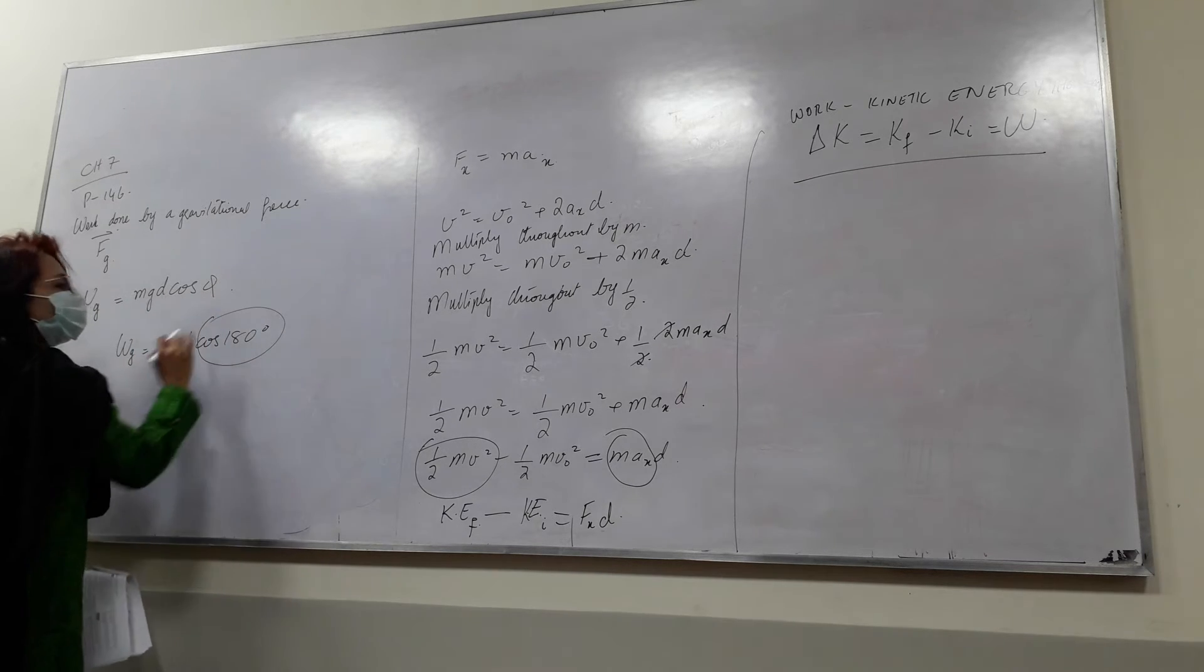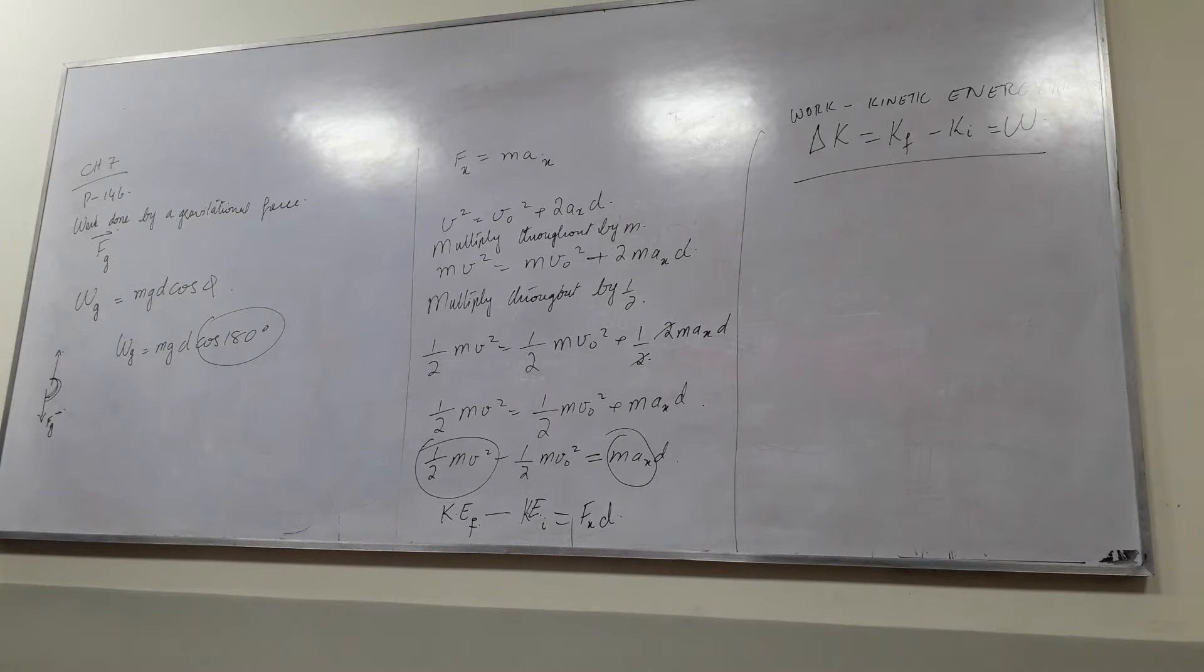Cos 180 degrees, you might remember, is equal to minus 1. Cos 0 is equal to 1. Cos 180 is equal to minus 1, and cos 90 is equal to 0.